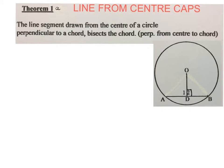So let's see what the theorem says. It says the line segment drawn from the center of a circle, there is the center of a circle O, there's a line segment moving down. If it is perpendicular to the chord, so if it hits the chord at 90 degrees, it bisects the chord. And the abbreviation will be perpendicular from the center to the chord.